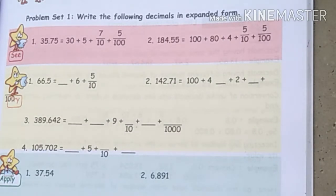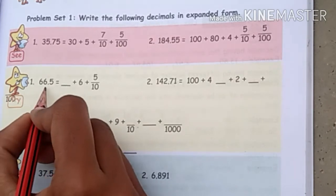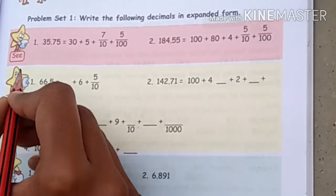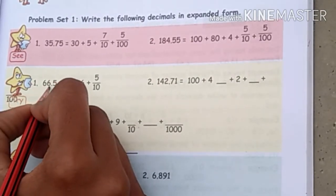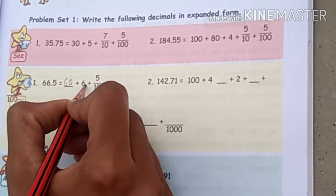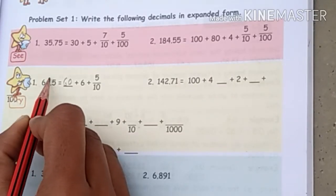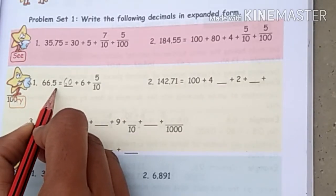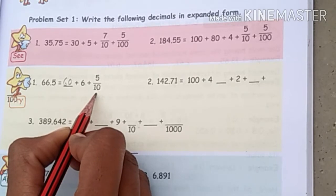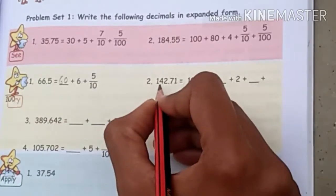Now let's do Problem Set 1: write the following decimals in expanded form — the same as what you just learned in task seven. First of all, we will do the first question: 66.5. So 66 can be written as 60 plus 6. Then 0.5 — the first digit after the decimal is 5, so we write 5 upon 10.